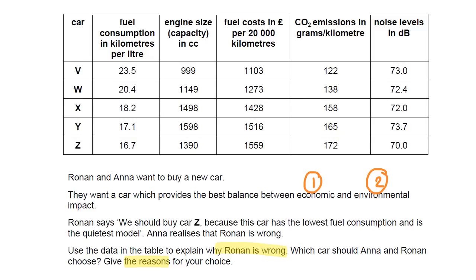Why is Ronan wrong? He says that car Z has the lowest fuel consumption. Car Z shows 16.7 km per litre — that is in fact the highest fuel consumption, not the lowest. The lowest fuel consumption is car V, because it says the most kilometres for each litre. So that's a more economic car in that sense.